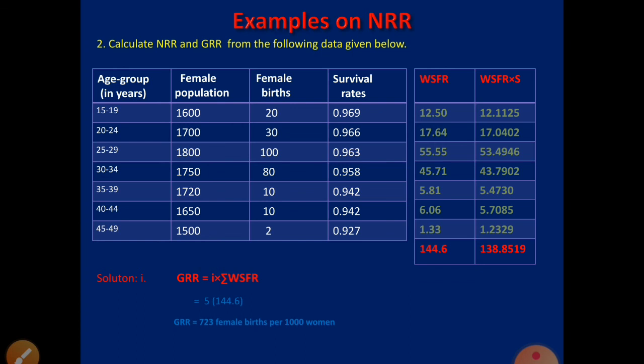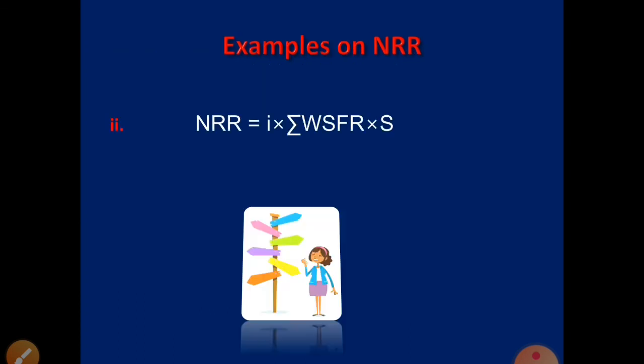Now for NRR, the formula is I × Σ(WSFR × S). Multiplying the WSFR values by the respective survival rates S and summing, Σ(WSFR × S) = 138.8519. Therefore, NRR = 5 × 138.8519 = 694.2595 female births per 1000 women. Thank you.